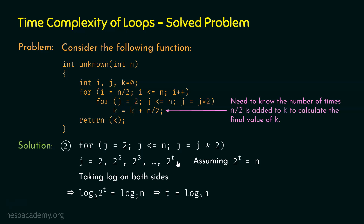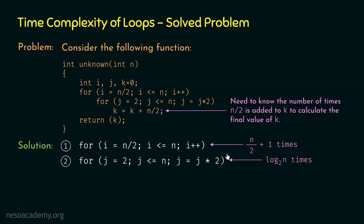From the pattern, in the first iteration the power of 2 is 1, in the second it's 2, in the third it's 3 — so the power equals the iteration number. Therefore the last iteration is the tth iteration, meaning this inner for loop executes t times. Replacing t with log₂(n), this inner for loop executes log₂(n) times. To summarize: the outer for loop executes n/2 + 1 times, and the inner for loop executes log₂(n) times.